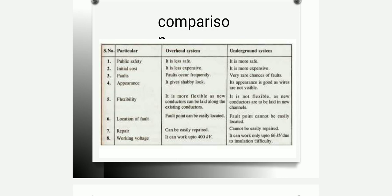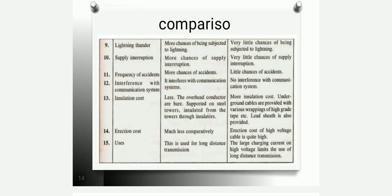For appearance, overhead lines give a shabby look whereas underground looks good because the cables cannot be seen. The flexibility of the overhead system is very high compared to the underground system, where cables are laid in fixed channels. Fault location is easy in overhead systems but cannot be easily detected in underground systems. Repair is easy in overhead but not easy in underground. For working voltage level, overhead can work up to 400 kV while underground can work only up to 66 kV due to insulation difficulties. Other differences include lightning, thunder, supply interruption, frequency of accidents, interference with communication systems, insulation cost, and air action cost.